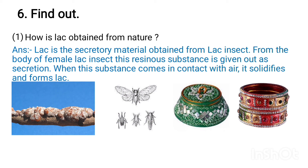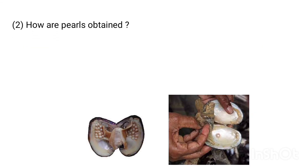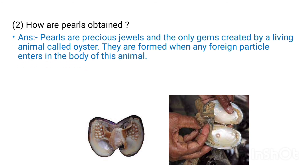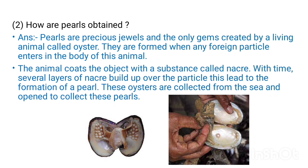Second: How are pearls formed? Answer: Pearls are precious jewels and the only gem created by a living animal called an oyster. They are formed when any foreign particle enters the body of this animal. The animal coats the object with a substance called nacre. With time, several layers of nacre build up over the particle, leading to the formation of a pearl. These oysters are collected from the sea and opened to collect the pearls. Thank you.